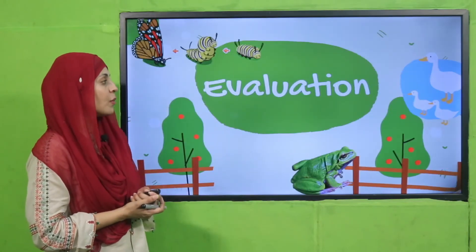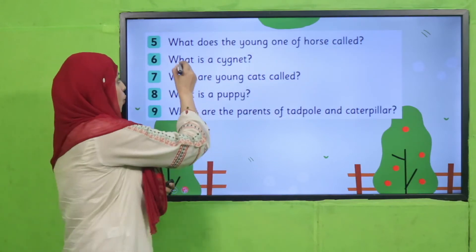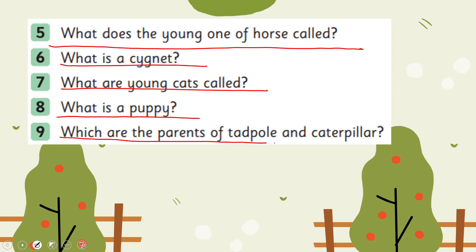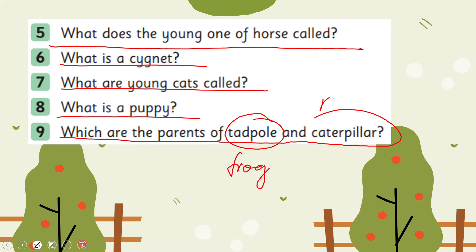For evaluation, quickly answer these questions. What is the young one of a horse called? It is called a foal. What is a cygnet? It is a baby swan. What are young cats called? Kittens. What is a puppy? It is a baby dog. What are the parents of a tadpole and a caterpillar? The tadpole's parents are frogs, whereas the caterpillar's parents are butterflies.